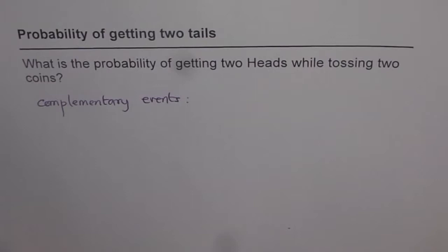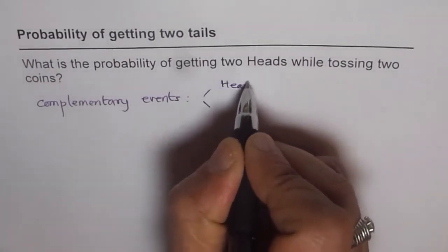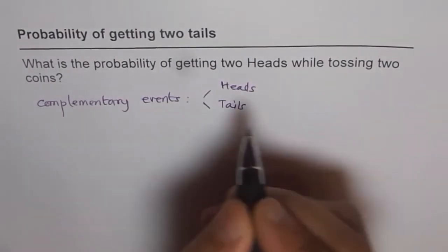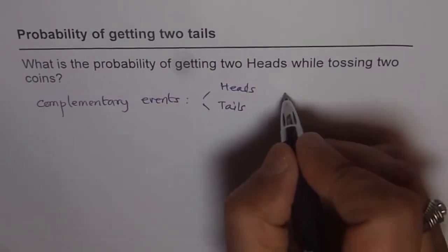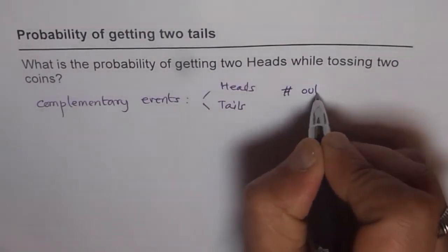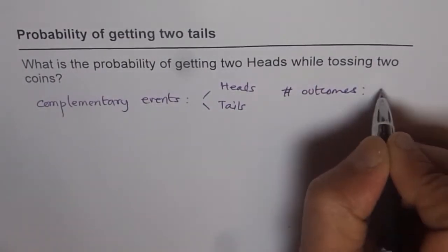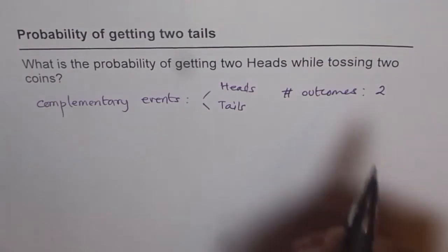When you toss a coin, either you get heads or you get tails. If you get heads, you cannot get tails. So these are two complementary events. We need to find out how many complementary events there are so we know our number of outcomes. In this case, number of outcomes is two — either head or tail for one coin.